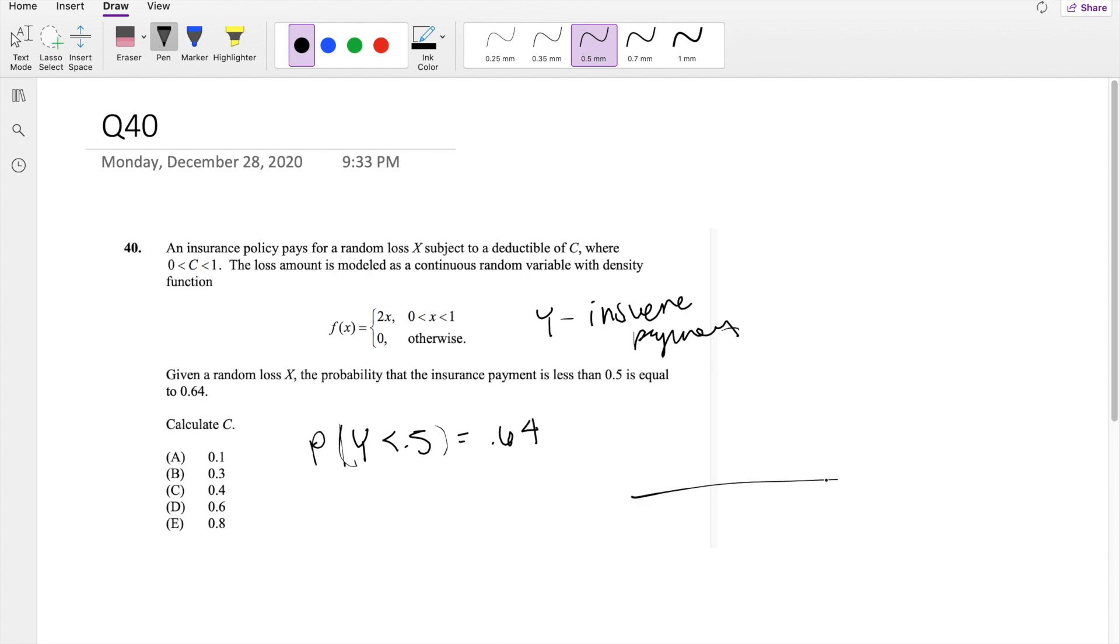And then we know that if there is a deductible C, anything between 0 and C, the insurance payment is gonna be 0 because everything is coming out of the customer's pocket. But from C to 1, that's the upper limit, the amount the insurance company is gonna pay is gonna be x, whatever the loss is, minus the deductible.